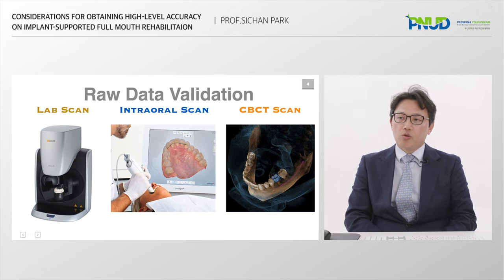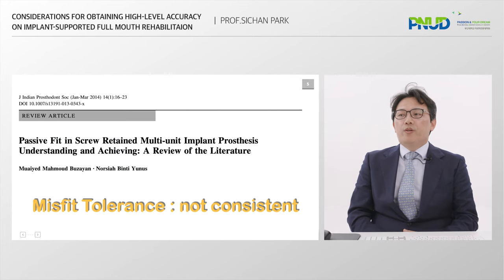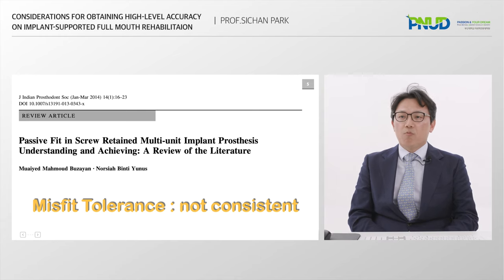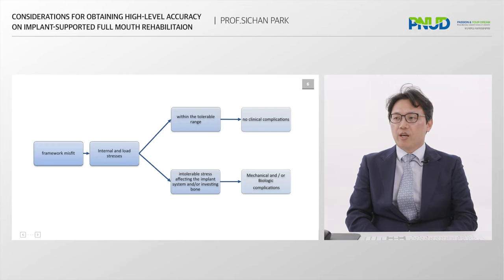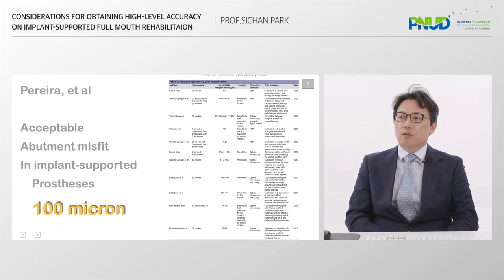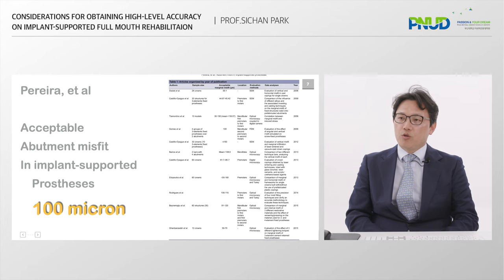This covers lab scan, intraoral scan, and CBCT scan. Could we know how much dislocation at the abutment-implant interface can be a problem? One paper states that many articles do not indicate a specific acceptable range of misfit. But we can predict the result. Within the tolerable range, there are no clinical complications. But too large a misfit can create internal stress and cause mechanical and biological complications. An acceptable abutment misfit is near 100 microns — usually 50 to 150 microns is acceptable.